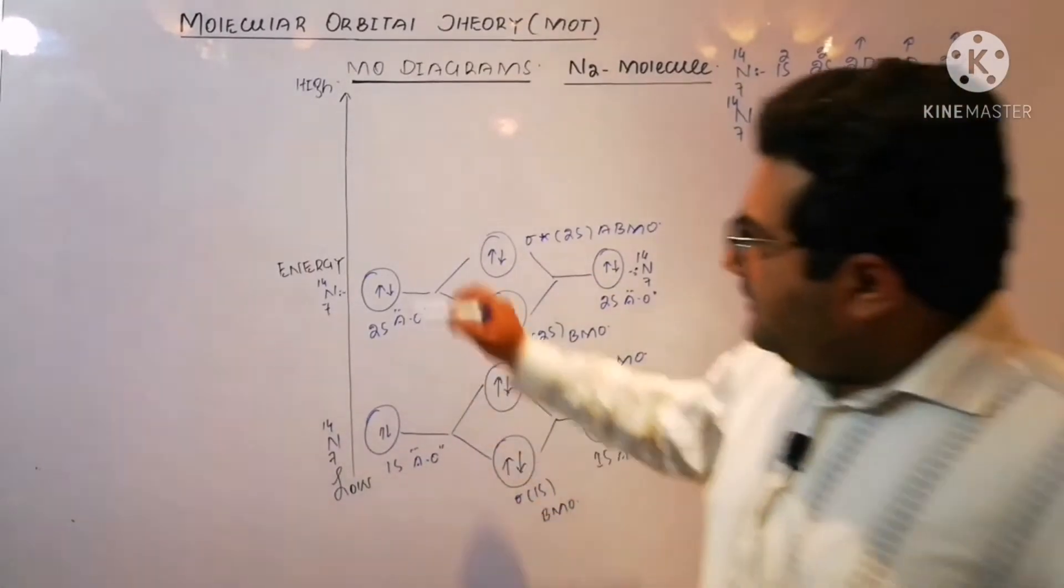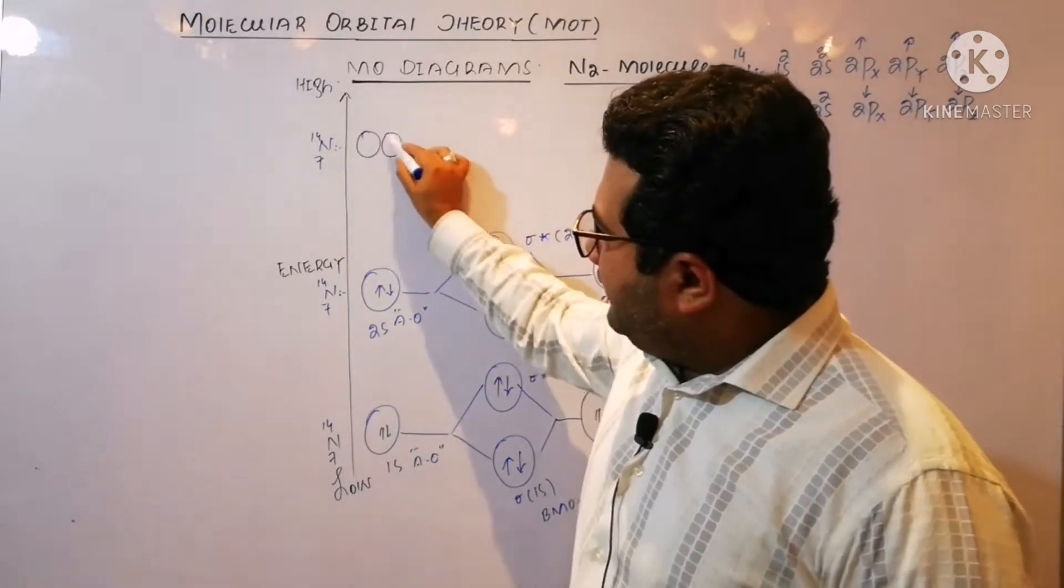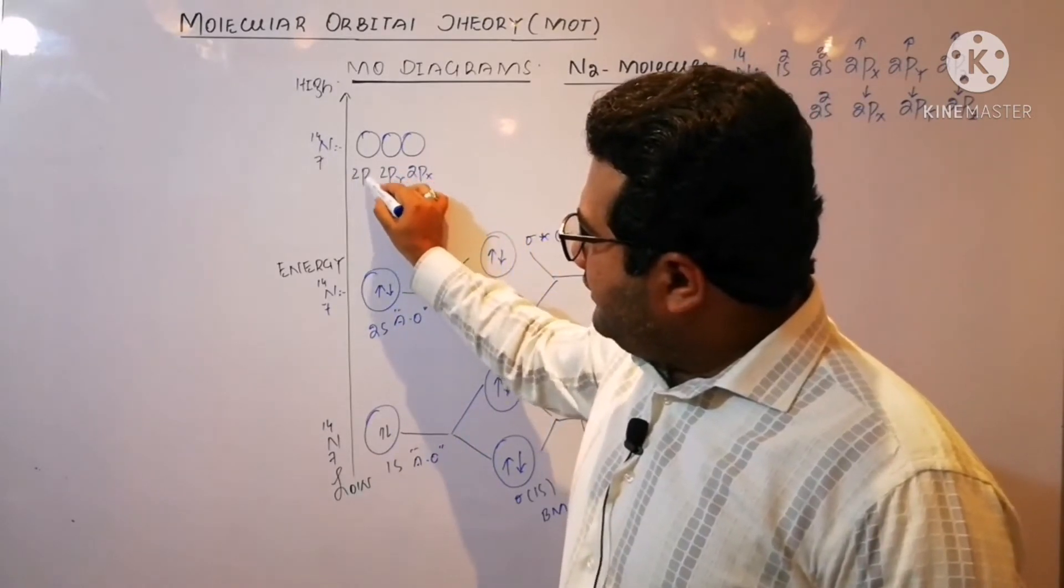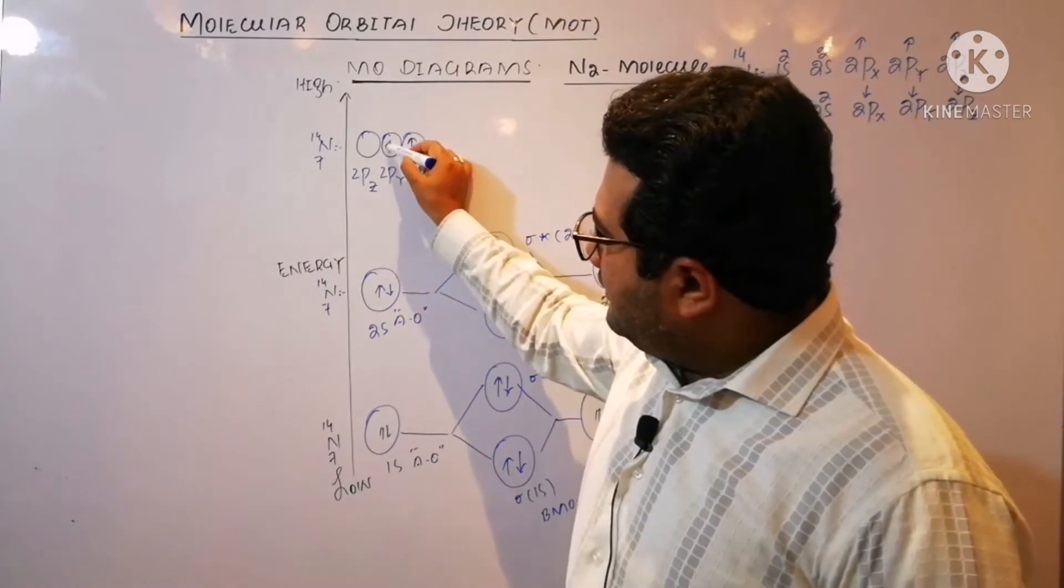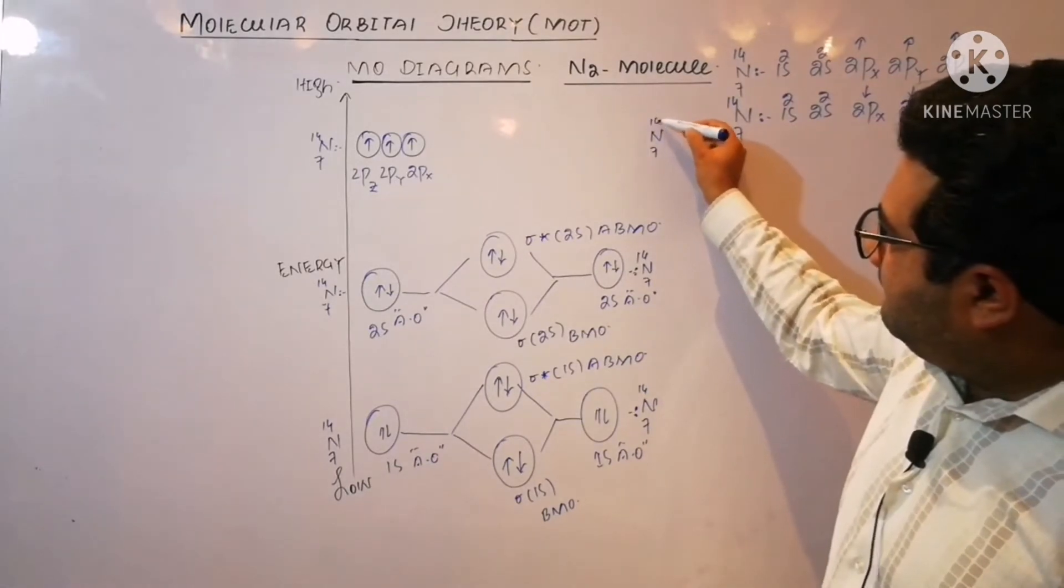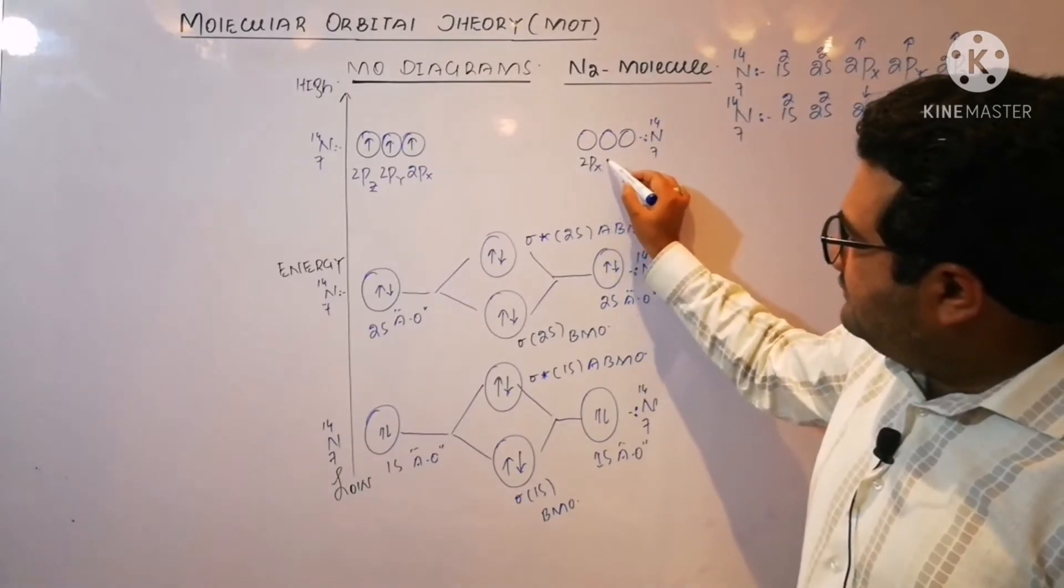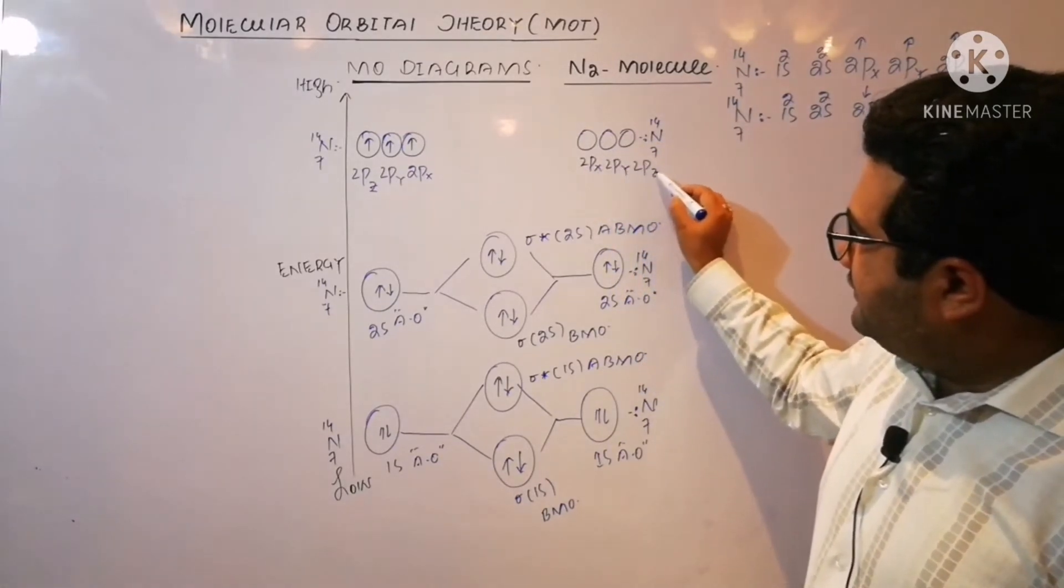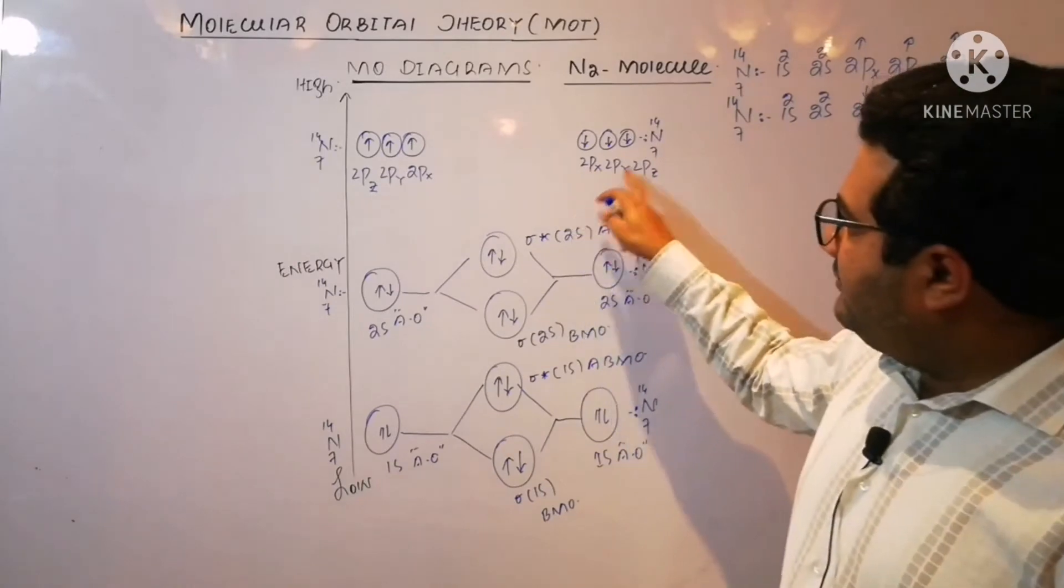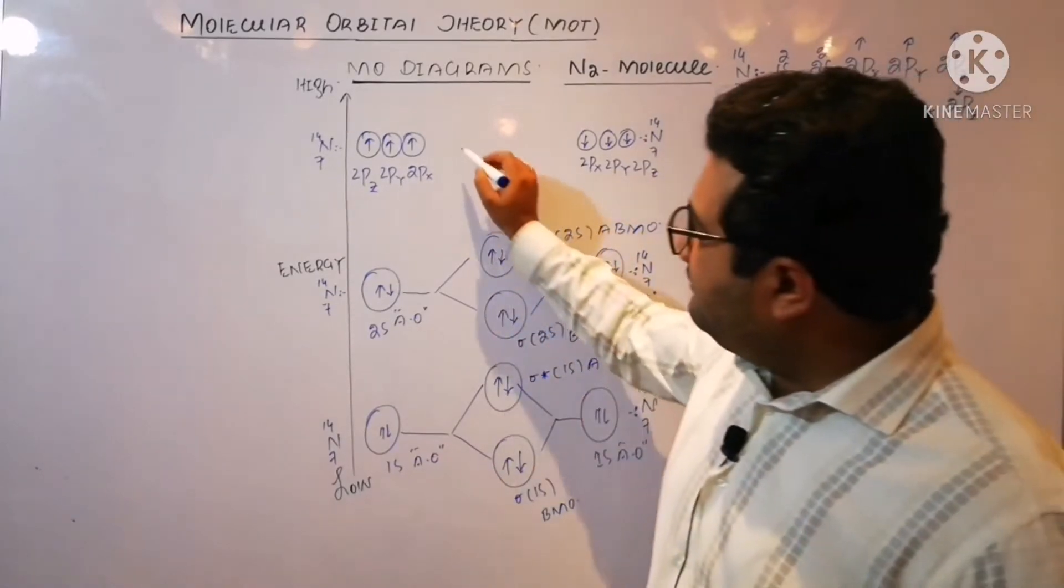Now let us move towards the three degenerate orbitals: 2px, 2py, and 2pz, having one electron each. Again, 2px, 2py, and 2pz with one electron each but opposite spin. Now there are three atomic orbitals of this nitrogen and three atomic orbitals of the other nitrogen atom, so total molecular orbitals formed, that must be six.